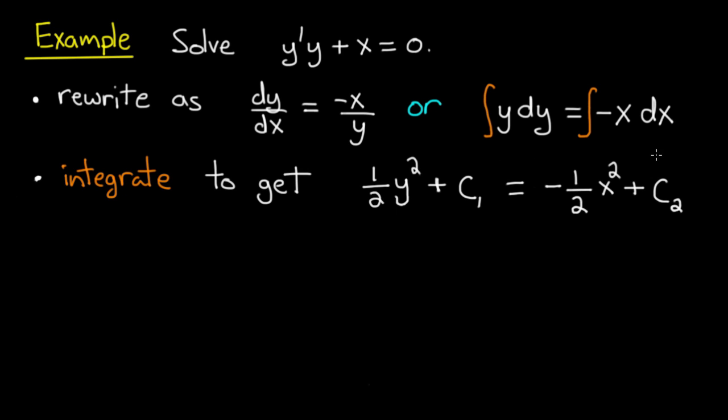If we carry out those integrals we get 1 half y squared plus some arbitrary constant, equals minus 1 half x squared plus some arbitrary constant, c2.